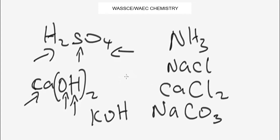Now let's look at the basic characteristics of a compound. One characteristic is that the formation of a compound is accompanied by a great evolution of heat. Another feature is that a compound is homogeneous in nature, and the combination occurs chemically.